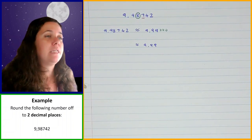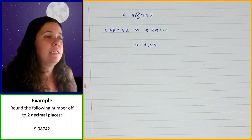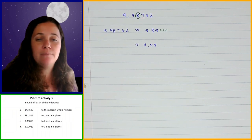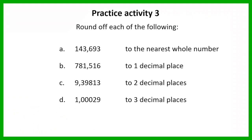Now you're going to use that same process to do the examples in this activity. You're rounding each of these numbers to different positions: the first one to the nearest whole number, then to one decimal place, to two decimal places, and to three decimal places. I'm going to give you two minutes to work on this activity.